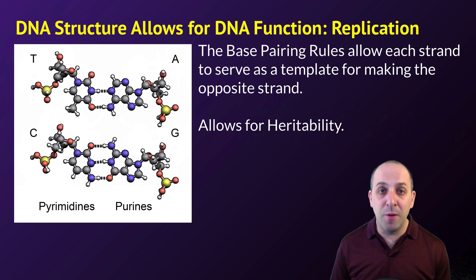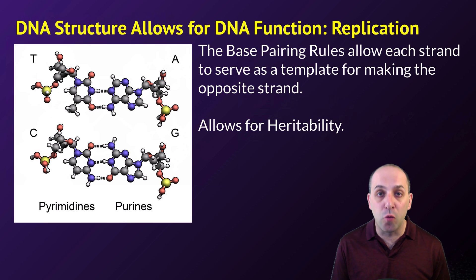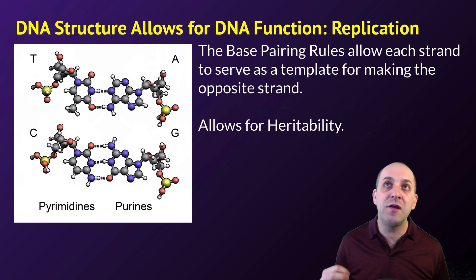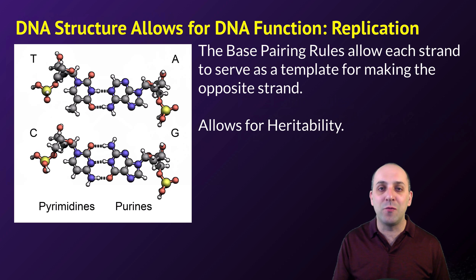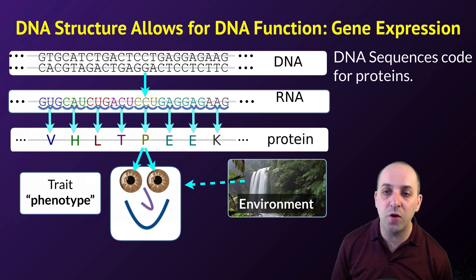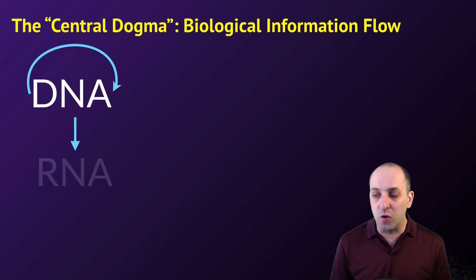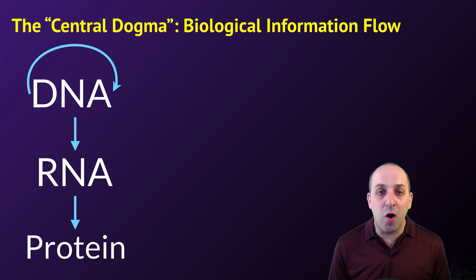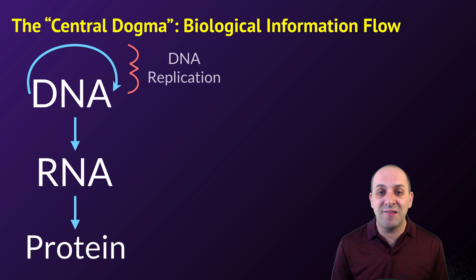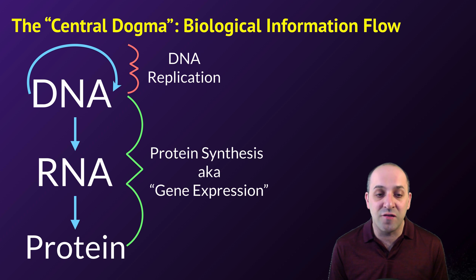DNA has two major functions. The first is heritability, which it accomplishes through the process of replication — being copied from one generation to the next — a function of the base pairing rules. The strands of a DNA molecule can be separated, and their nucleotide sequences can direct the synthesis of the complementary strand. The other major role is gene expression: DNA sequences hold the instructions that cells use to construct proteins, which are the major way cells influence their characteristics. DNA copies itself through DNA replication, and DNA information is turned into proteins through protein synthesis or gene expression.